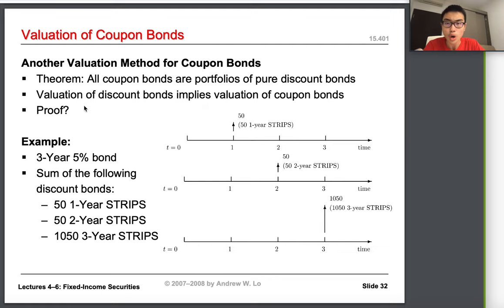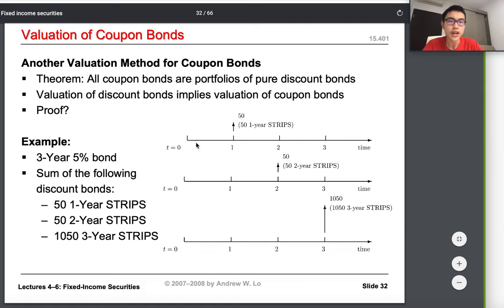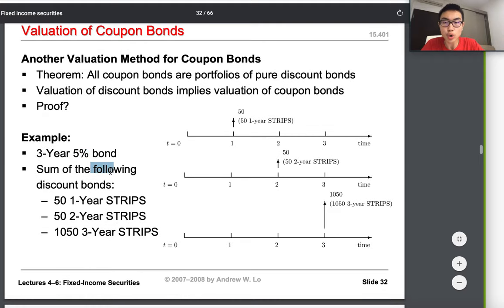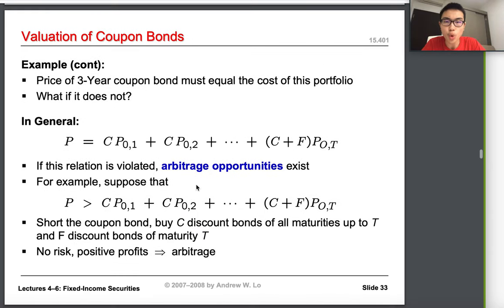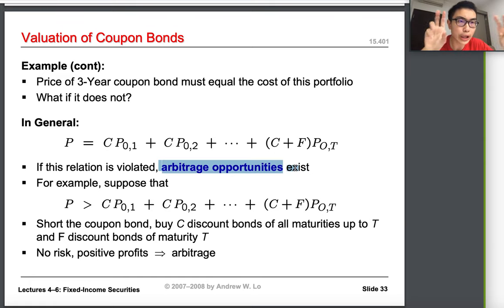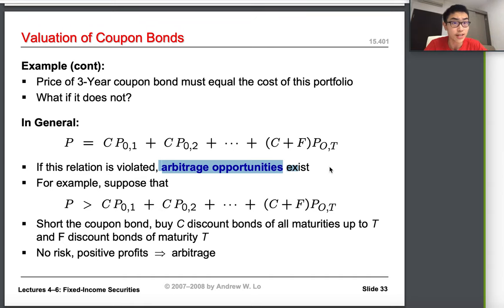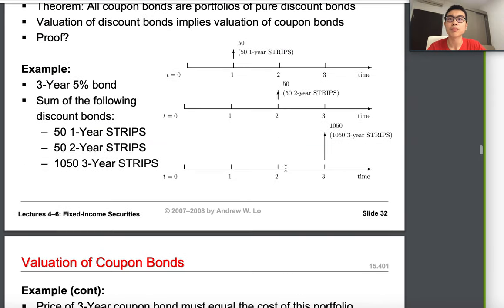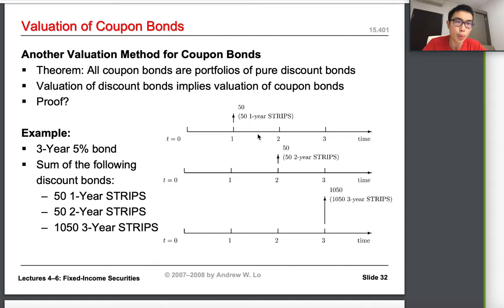For example, a three-year 5% coupon bond equals the sum of the following discount bonds: a $50 one-year strip, a $50 two-year strip, and a $1,050 three-year strip. This decomposition is shown on the timeline. The reason this equality must hold is explained by arbitrage, which is the main topic of today's lecture.